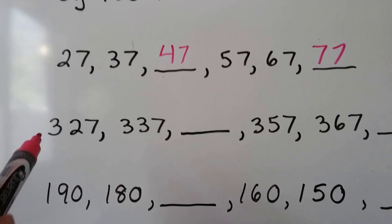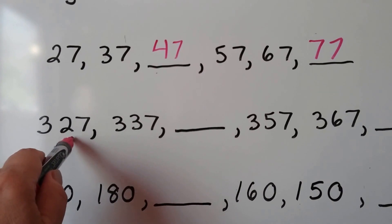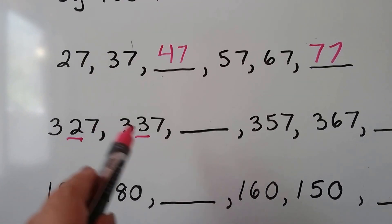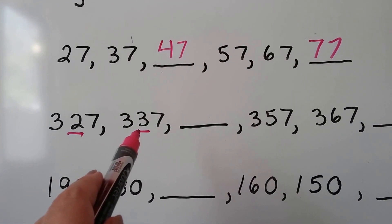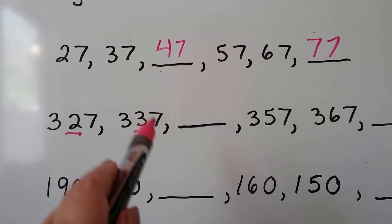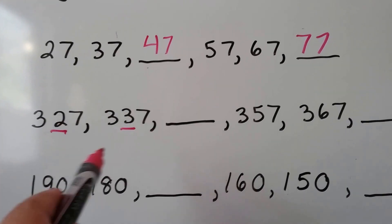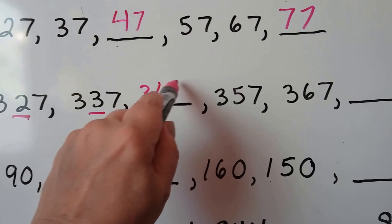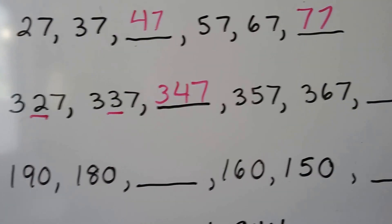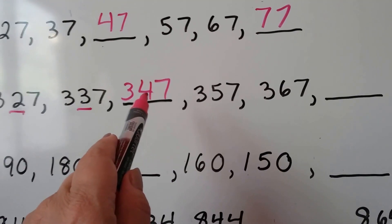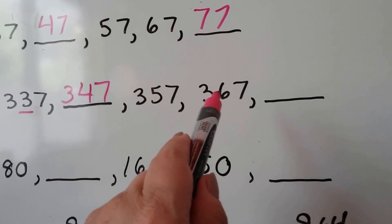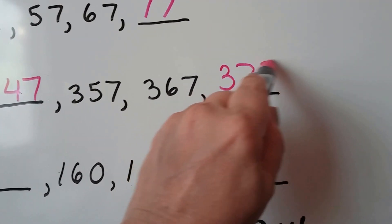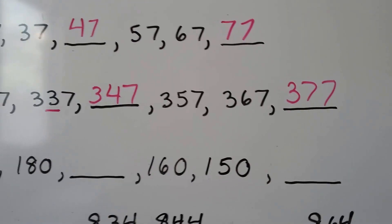Then we'd have five tens and six tens, so that would be seven tens — a 77 for seven tens and seven ones. Now with 327 and 337, don't worry about the hundreds place, just focus on the tens place since we're counting by tens. Is the tens place getting bigger or smaller? It's getting bigger, so we count on: two tens, three tens, four tens — giving us 347. Then five tens, six tens — the next would be seven in the tens place, giving us 377, with the hundreds and ones staying the same.